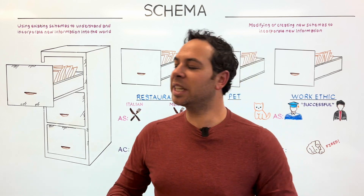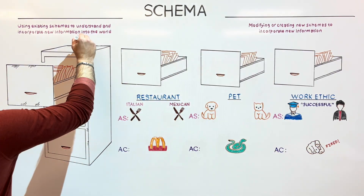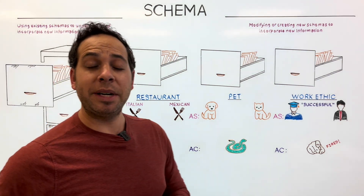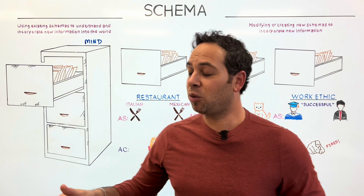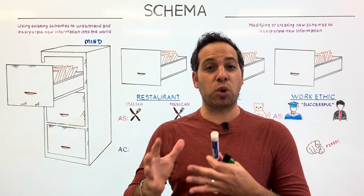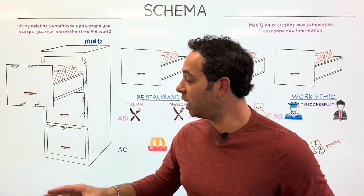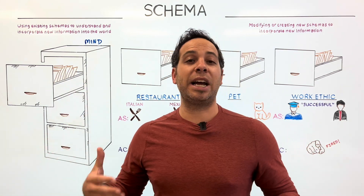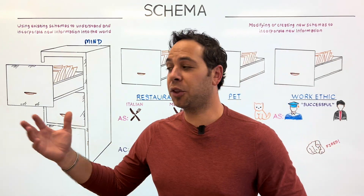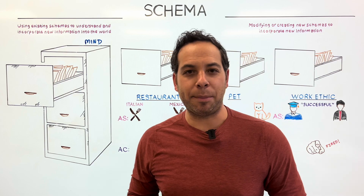The first thing I want to do is create an analogy. I want us to think about the mind like a filing cabinet. A filing cabinet is extremely organized. All the papers and documents within each drawer have some sort of relationship. Because it's organized, it's easily accessible — I know which drawer to open depending on what I'm looking for. And third, it's constantly changing. I can throw papers out, I can add papers in, depending on what's happening in the world.